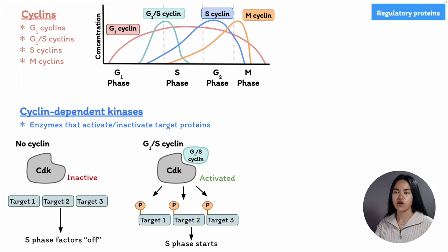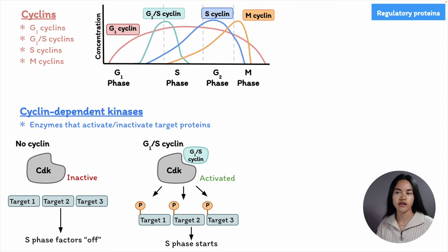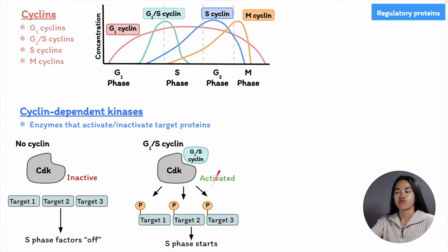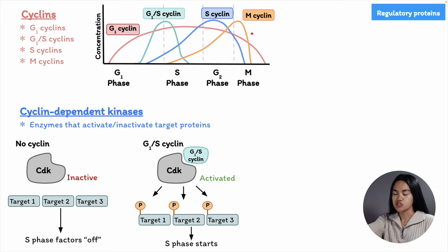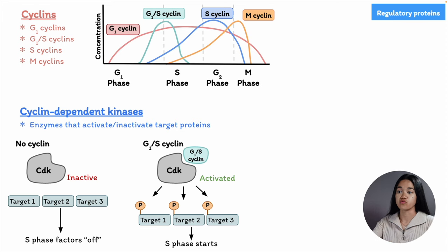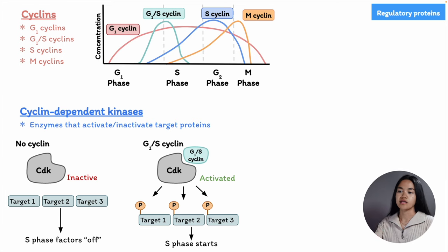Each kind of complex initiates a distinct cell cycle transition step by triggering a variety of target proteins. For example, the M cyclins would direct CDKs to M phase targets — such as breaking down the nuclear membrane — and this complex would phosphorylate, adding phosphate groups to their targets.